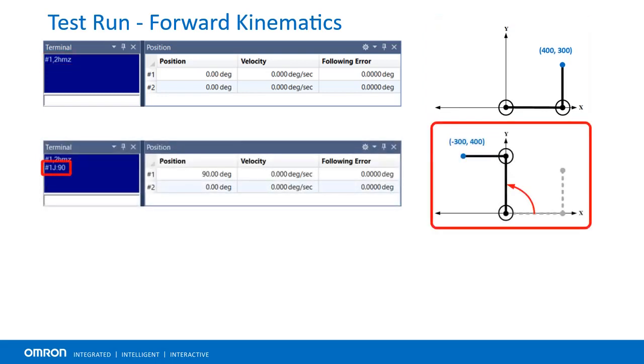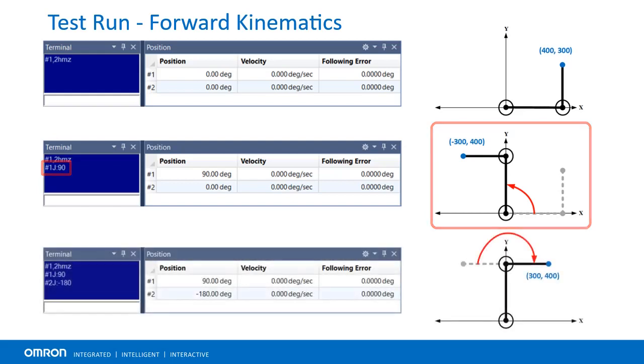Next, motor 1 is rotated 90 degrees. Afterwards, X is negative 300 and Y is 400. Finally, motor 2 is rotated negative 180 degrees. This flips X from negative 300 to positive 300.